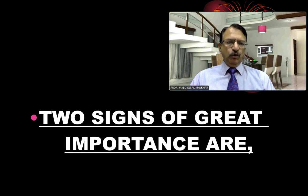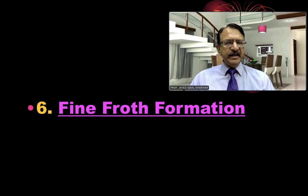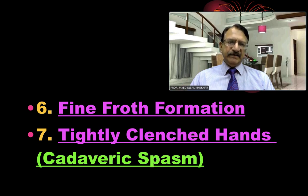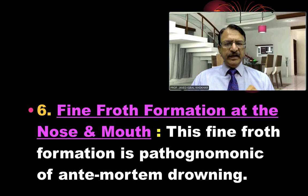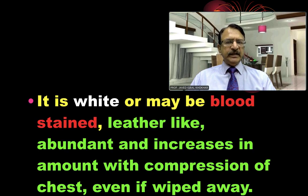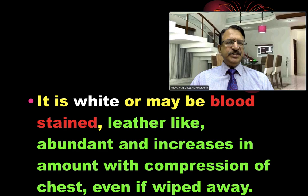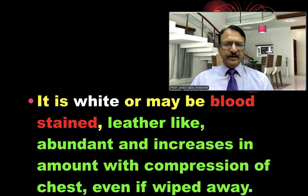The two most important signs externally seen are fine froth formation and cadaveric spasm. Cadaveric spasm is the tightly clenched hands. Fine froth formation is pathognomonic for ante-mortem drowning. When water enters into the respiratory passages, it causes irritation, which initiates secretion of mucus. This mucus, along with water and with vigorous violent respiratory efforts, starts producing fine froth.